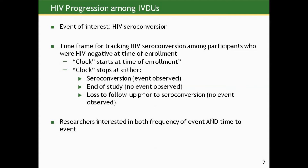Their event of interest is HIV seroconversion among people who were not previously HIV positive upon enrolling in the study. The clock starts at their time of enrollment and stops at either seroconversion — the person actually has a positive HIV test — or at the end of the study when the person had not had a positive HIV test and follow-up has ended, or they could be lost to follow-up prior to seroconversion with the last information being a negative test. The researchers are interested in both the frequency of the event in the groups being compared and the time to the event.